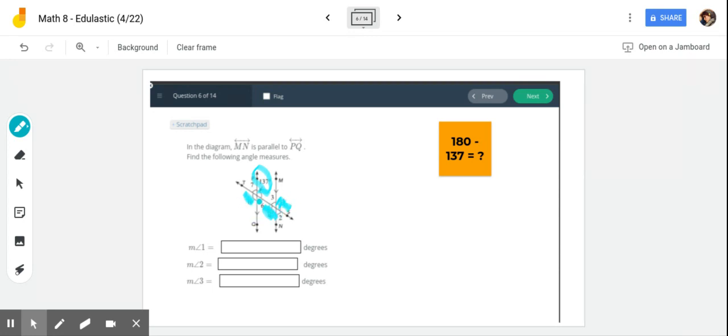Or I can say it's an alternate exterior with this one. Now all of those have some sort of relationship you can talk about, you can give it a special name. They're all congruent to each other. The rest of those angles are going to be supplementary to those angles we just did there in blue. I'm going to use green this time. 180 minus 137 gives me 43.